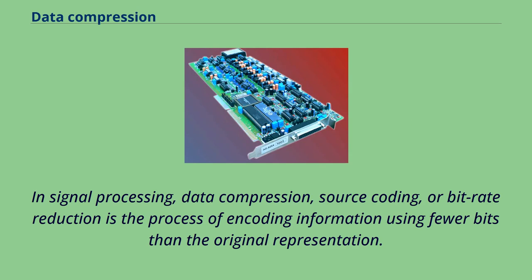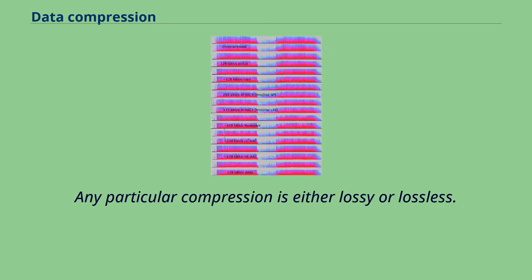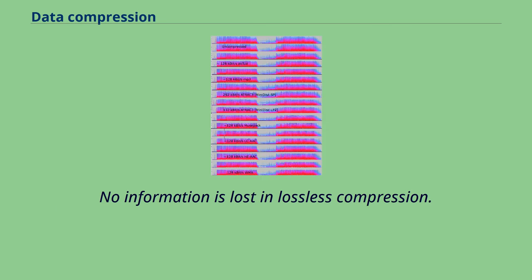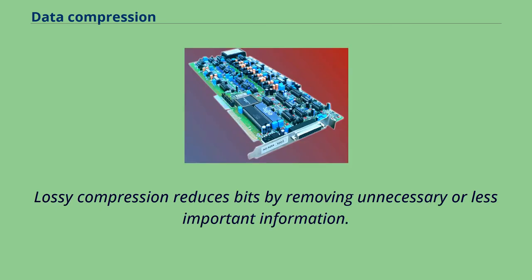In signal processing, data compression, source coding, or bitrate reduction is the process of encoding information using fewer bits than the original representation. Any particular compression is either lossy or lossless. Lossless compression reduces bits by identifying and eliminating statistical redundancy. No information is lost in lossless compression. Lossy compression reduces bits by removing unnecessary or less important information.